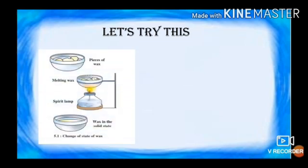Let us try this. Take pieces of wax in a bowl and heat them on a candle or a spirit lamp. How do the pieces of wax change? The pieces of wax change into liquid. What was the initial state of wax? The initial state of wax was solid. What did it get converted into? After heating, it converts into liquid state.